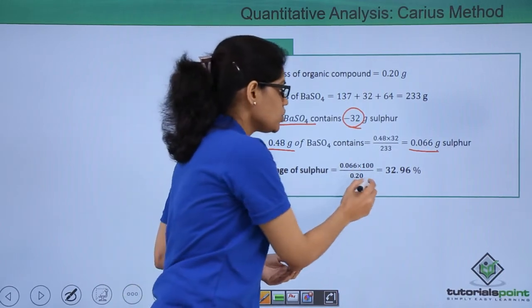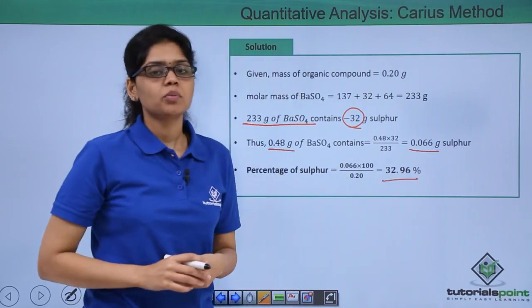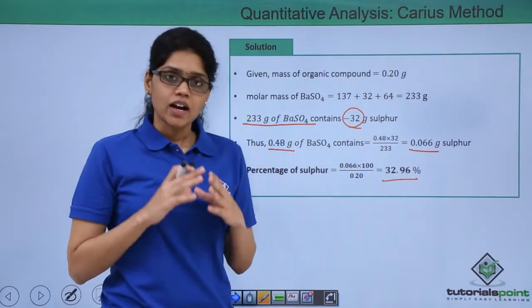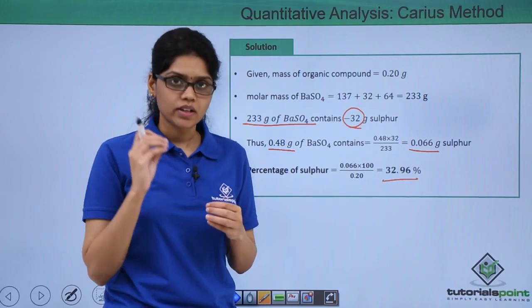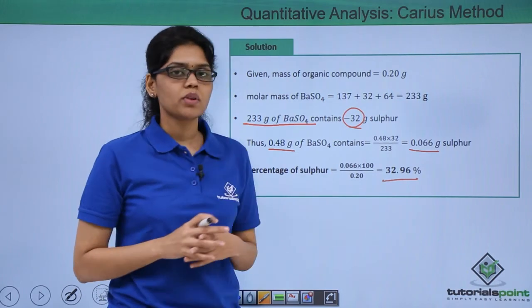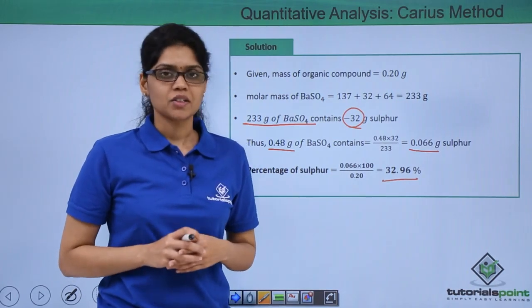I hope you are very clear on how to estimate sulphur present in an organic compound quantitatively and what is the formula used for the same. Thank you.